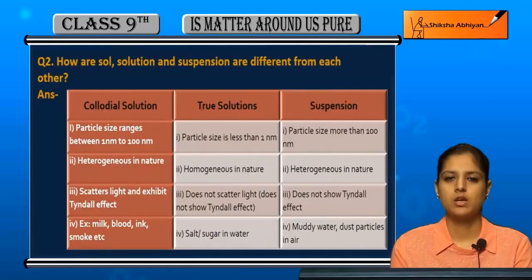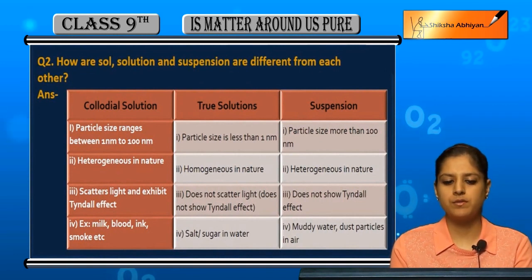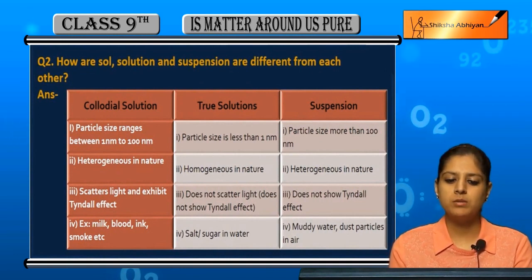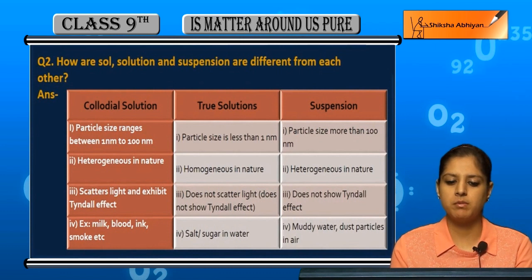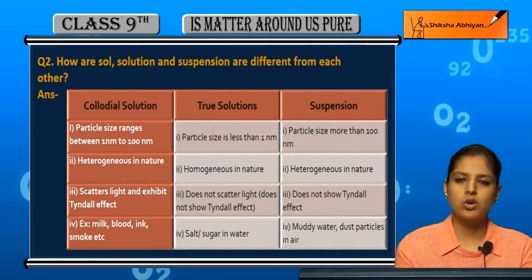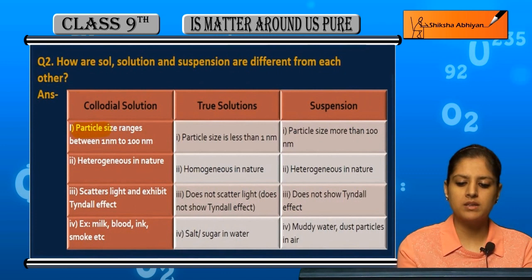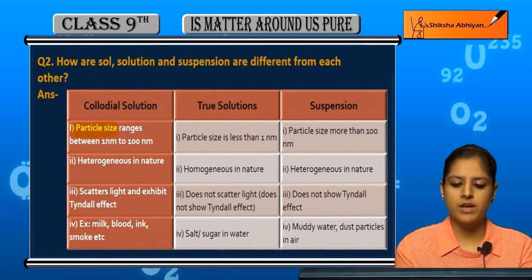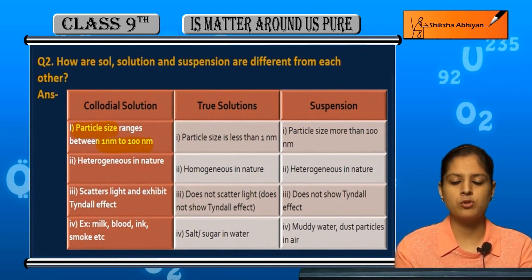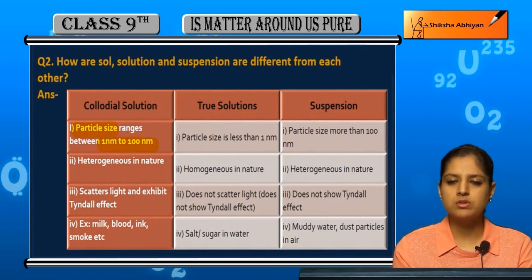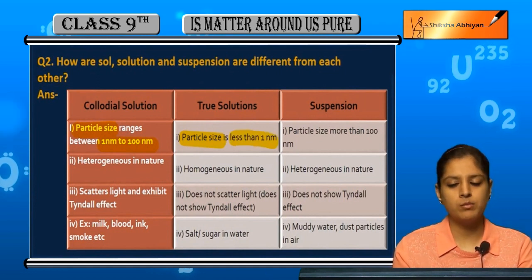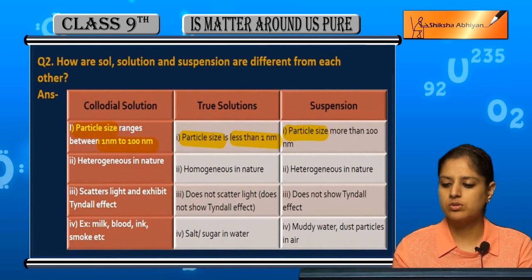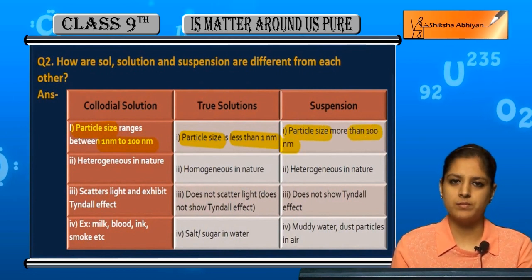Question number two: how are colloidal solution and suspension different from each other? Starting with colloidal solution, the particle size of a colloid is between one nanometer and hundred nanometers. For a true solution, the particle size is less than one nanometer. And in suspension, the particle size is greater than hundred nanometers.